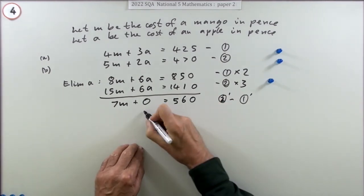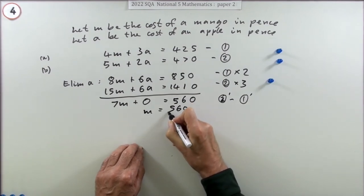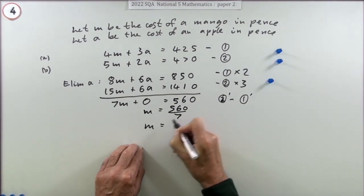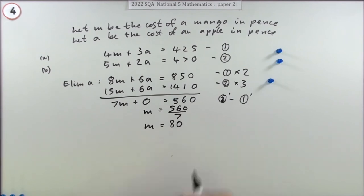Getting m equals 80 is worth a mark. Now that you've got what m is, you can go back to one of the original ones and find a.